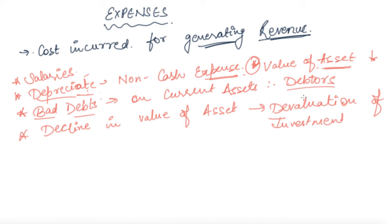Bad debts are basically written off on the current asset, that is on debtors. If you make some sales on a credit basis, only then you will be able to earn more sales. To increase your sales, you are required to sell your product on credit basis, and for that you also have to incur the expense named bad debts. Similarly, there is also the expense known as devaluation in investment. If you invest today, in the long run you will earn profit, but in the short run the investment value is continuously either declining or increasing. For that period you need to face the expense known as devaluation in investment.